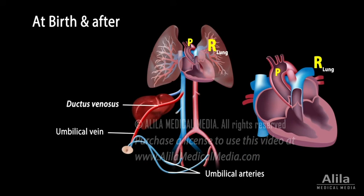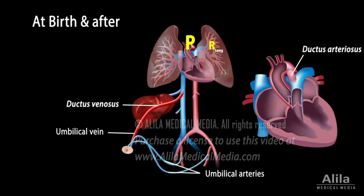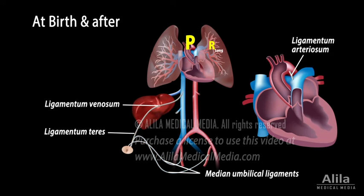At birth, as the lungs expand with air, pulmonary vascular resistance drops rapidly. At the same time, clamping of the umbilical cord increases systemic vascular resistance. These two changes enable the right heart to pump blood to the now lower-resistant lungs. The increased systemic resistance also raises the pressure in the left atrium to a higher value than the right atrium, forcing the foramen ovale to close. Pressure changes, together with presence of oxygen and decreased prostaglandin levels, cause the fetal shunts to close and become ligaments.